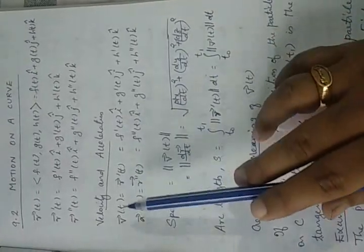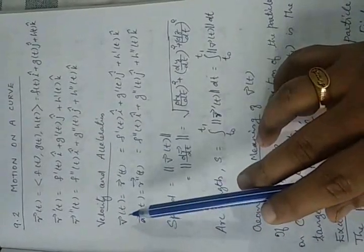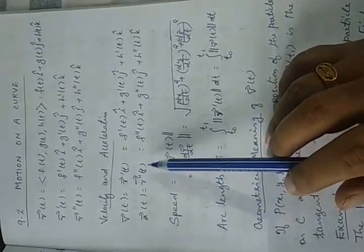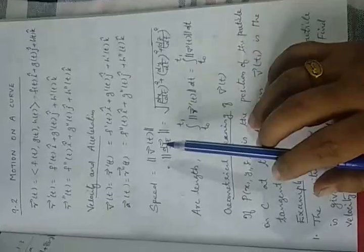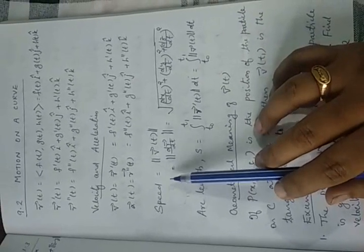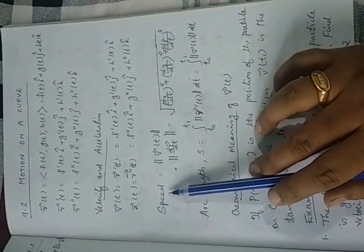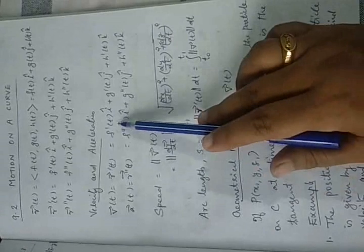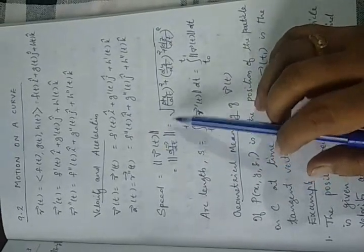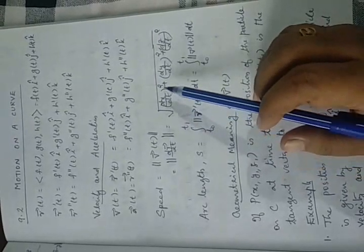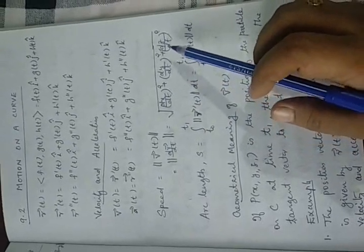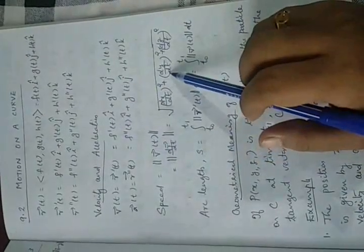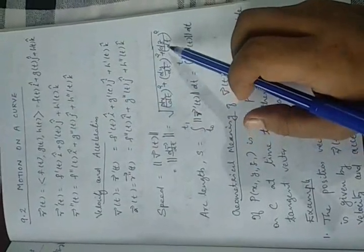The velocity vector of the moving particle is V(t) = R'(t), and the acceleration vector is A(t) = R''(t). Speed is the magnitude of the velocity vector, so speed = ||V(t)|| = sqrt((dx/dt)² + (dy/dt)² + (dz/dt)²), where dx/dt = F'(t), dy/dt = G'(t), and dz/dt = H'(t).